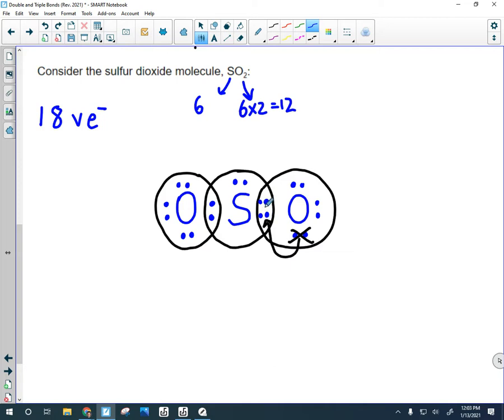And now I'm okay with the octet rule. This oxygen still has 2, 4, 6, 8. This one still has 2, 4, 6, 8. The sulfur now has 2, 4, 6, and 8. So the octet rule is followed.